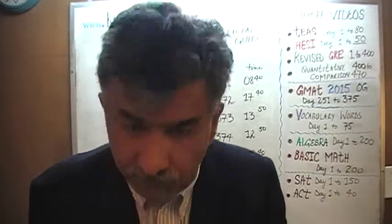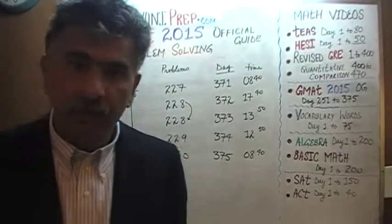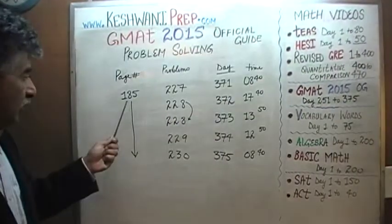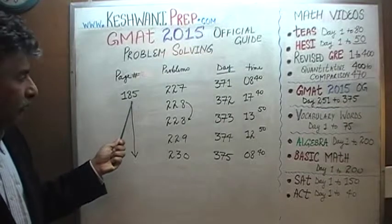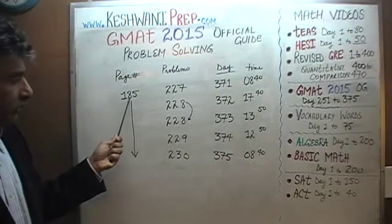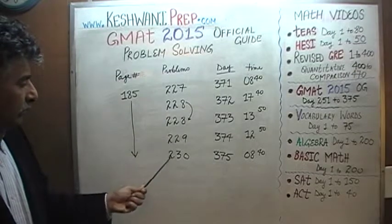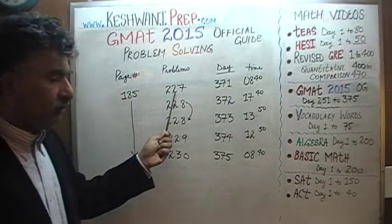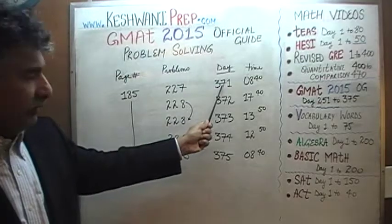We are on the very last page of the problem solving questions. On page number 185, you will find four problems: problem number 227, 228, 229, and 230. You will find the solution to problem number 227 on day number 371.